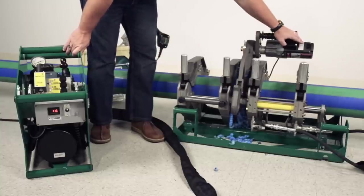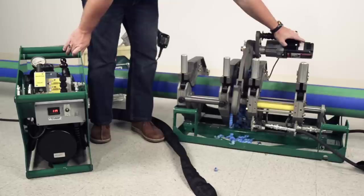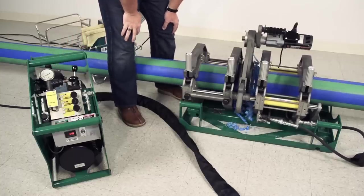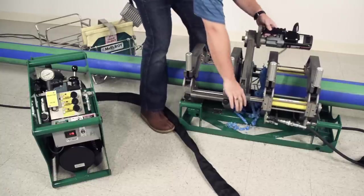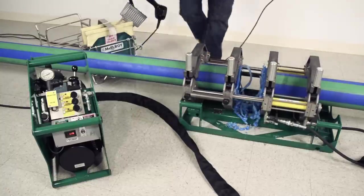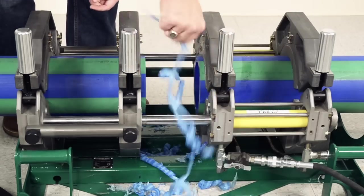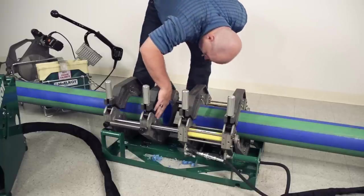With the jaws still against the stops, turn the facer off. Once the blades have stopped spinning, you may open the carriage and remove the facer. Now inspect the pipe ends to ensure that at least a full ribbon of material has been removed. Rubbing alcohol may be used again at this point, if needed, to completely clean off the faced-off surface.